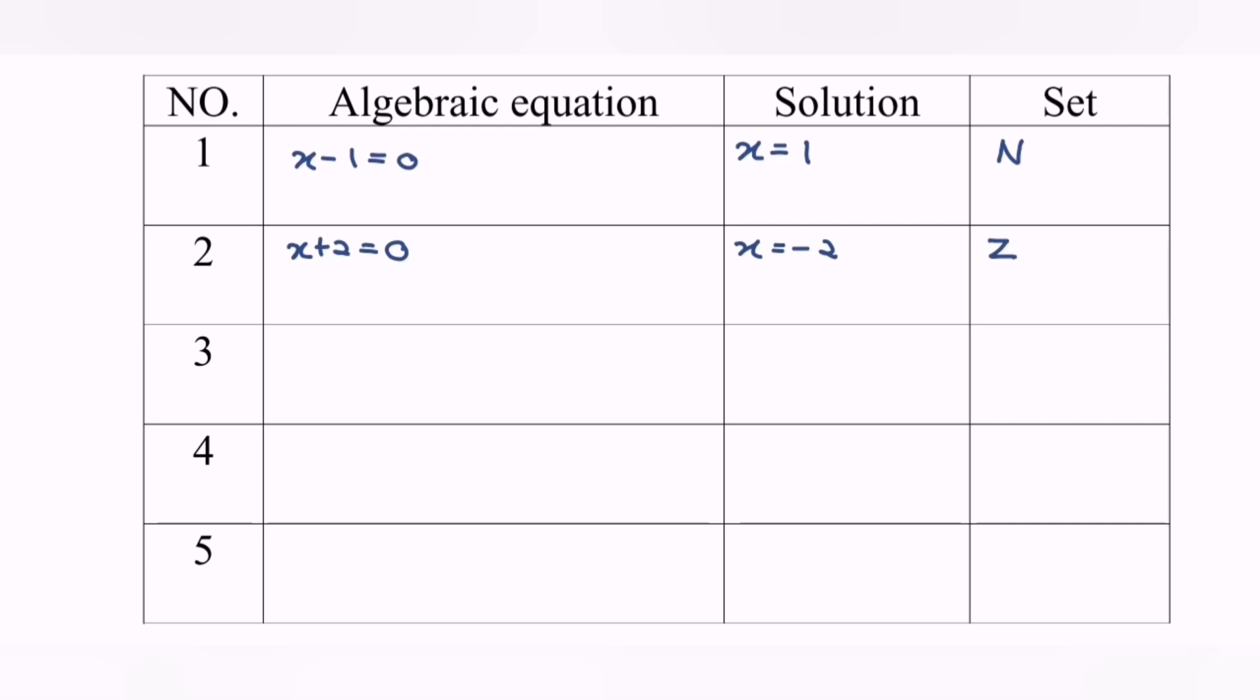Another example, let's say we have 2x minus 1 equals 0. What is the solution to this algebraic equation? The solution would be x equals one half. What is the name for this type of solution? It is rational numbers with the symbol capital Q.